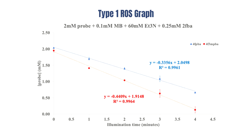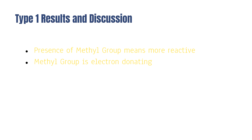This is the graph that resulted from the Type 1 reaction. We see here that red, which had the methyl group, reacts faster than the compound which did not have the methyl group. This is because methyl is actually an electron donating group, and this increase in electron density makes it more reactive with ROS.